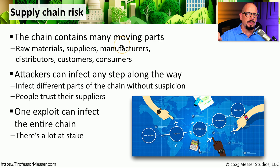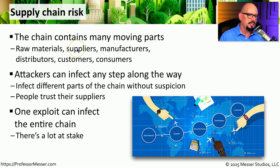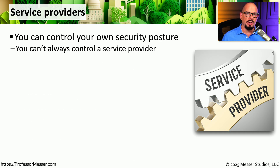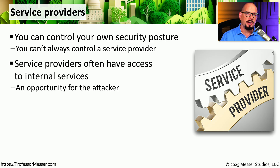An exploit with a raw material supplier used to create a product you purchase could potentially be a security problem within your organization. You have no control over the security of those raw material suppliers and you're not involved with the process, but ultimately this becomes a security concern for you. Although we have complete control over the IT security of our own organization, we may not have that same visibility for any of our providers. In many cases, these third-party providers might already have access to our network through an internal portal they use to determine what tasks we want them to perform.